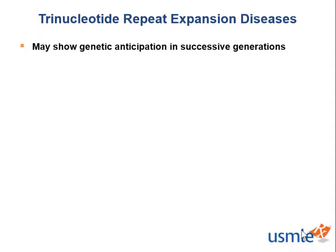The trinucleotide repeat expansion diseases may show genetic anticipation in successive generations. What does that mean? It's like you get too excited and can't wait and get started earlier than normally, and you may do something more intensely. Similarly, in trinucleotide repeat expansion diseases with genetic anticipation, disease severity increases and age of onset decreases. So if someone got diagnosed with Huntington's at 64 because he had 30 repeats with minimal symptoms, his son may get Huntington's disease earlier, like at 54, because he had 40 repeats and may show more symptoms.